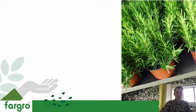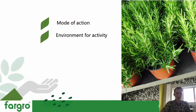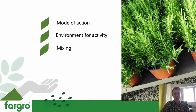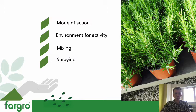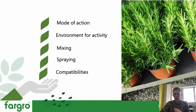Key things to think about with biopesticides include mode of action — how is the product working, is it contact, does it have some systemic activity? What is the environment going to be — what humidities and temperatures are needed to get the product to work effectively? There's no point applying the product if the environmental conditions aren't right. Think about mixing: is there any benefit to pre-mixing, do you need an adjuvant? Spraying: how are you going to apply it to actually get to the pest if it's hiding within the foliage? And compatibilities: from a tank mix perspective, are there products that are going to affect the biopesticide — for example, if you apply an entomopathogenic fungus and then follow with a fungicide?